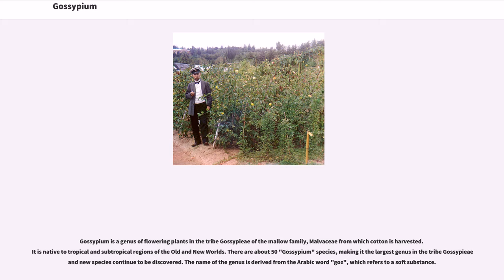Gossypium is a genus of flowering plants in the tribe Gossypii of the Mallow family, Malvaceae, from which cotton is harvested. It is native to tropical and subtropical regions of the Old and New Worlds. There are about 50 Gossypium species, making it the largest genus in the tribe Gossypii, and new species continue to be discovered. The name of the genus is derived from the Arabic word 'gos', which refers to a soft substance.